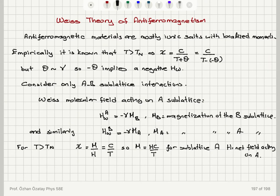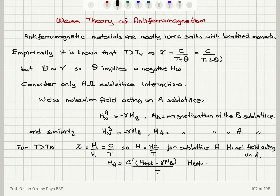Considering that sub-lattice A has turned into a paramagnet with susceptibility C over T, the magnetization of sub-lattice A is some constant C' multiplied by the net field — the external field minus gamma times M_B — divided by temperature T. Similarly, the magnetization of sub-lattice B is C' times the external field minus gamma times M_A, divided by T.